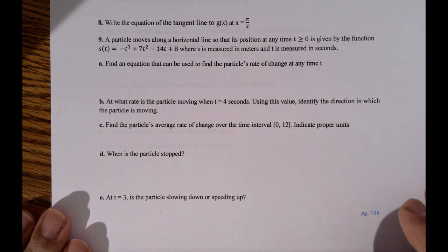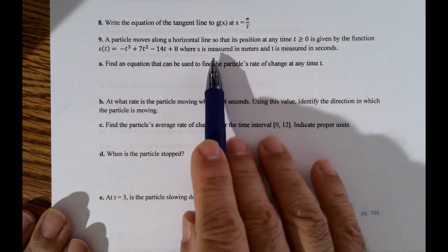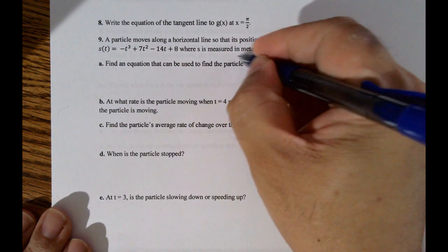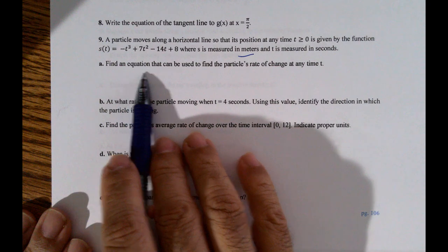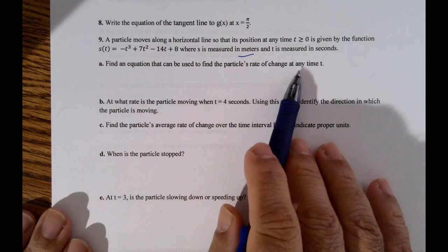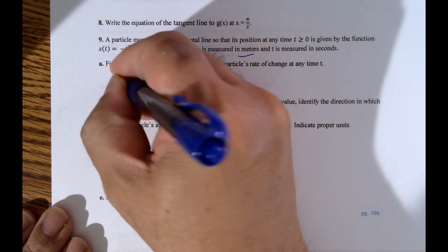So you're given a position function where s is measured in meters and t is measured in seconds. Finally, the equation can be used to find a particle rate of change at any time t, so that's instantaneous velocity. That's going to be the derivative.